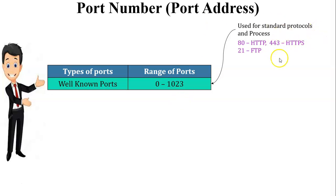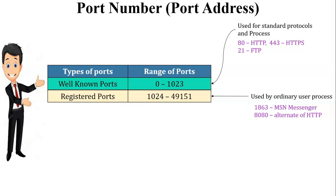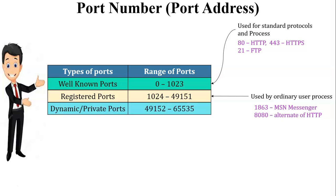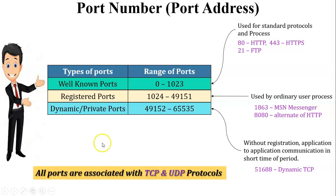The first type is well-known ports, with a range of 0 to 1023. Well-known ports are used for standard protocols and processes, like HTTP on port 80, HTTPS on port 443, and FTP on port 21. Well-known ports are associated with network protocols and operating system processes. The second type is registered ports, with a range of 1024 to 49151. Registered ports are used for ordinary user processes, like MSN Messenger on port 1863 and HTTP alternate on port 8080. Applications like Microsoft use registered port ranges, for example port numbers 1500 to 2500.